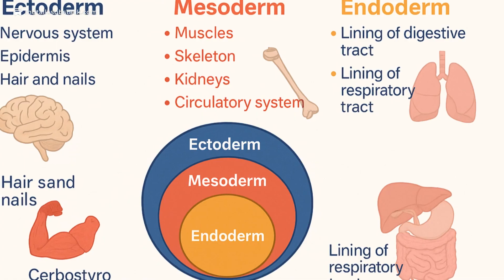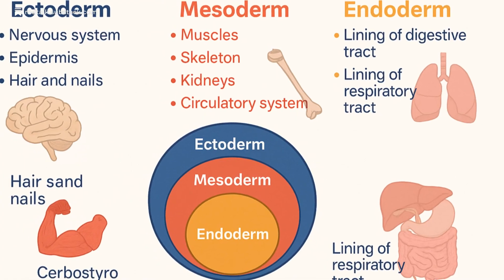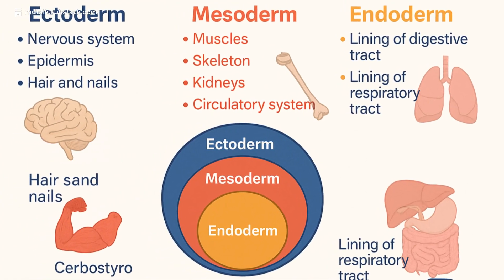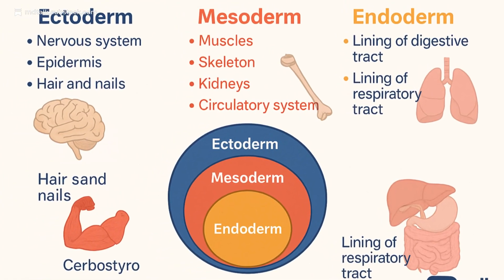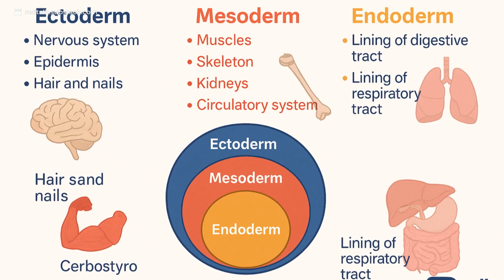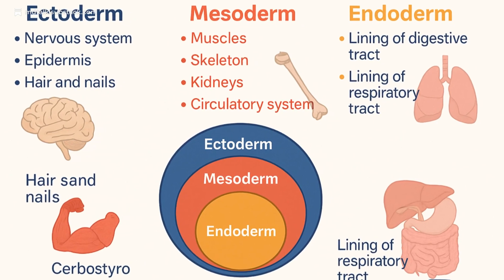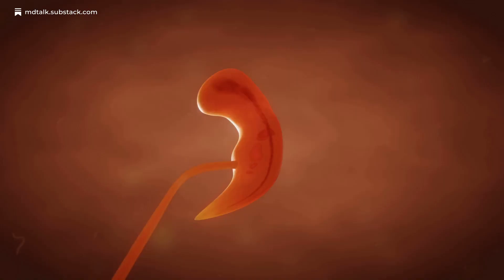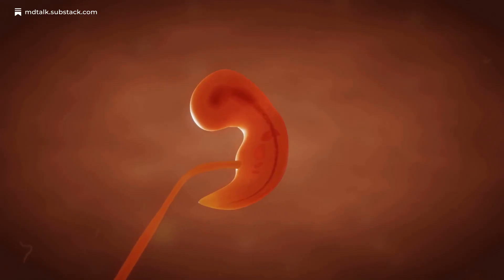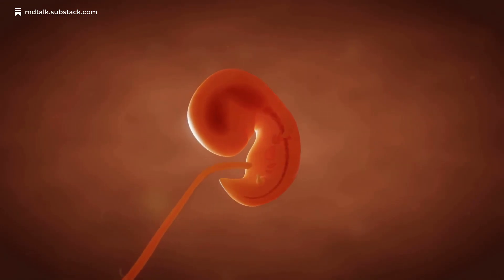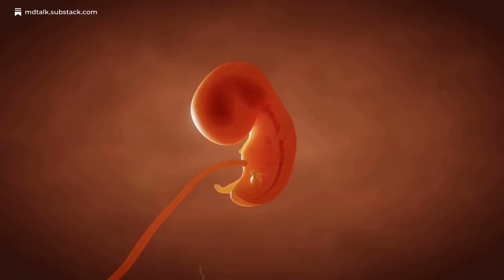Endoderm becomes the lining of the gastrointestinal and respiratory tracts, liver, pancreas and thyroid. The proper migration and specialization of these layers is vital. Disruption here can lead to congenital anomalies or embryonic arrest.